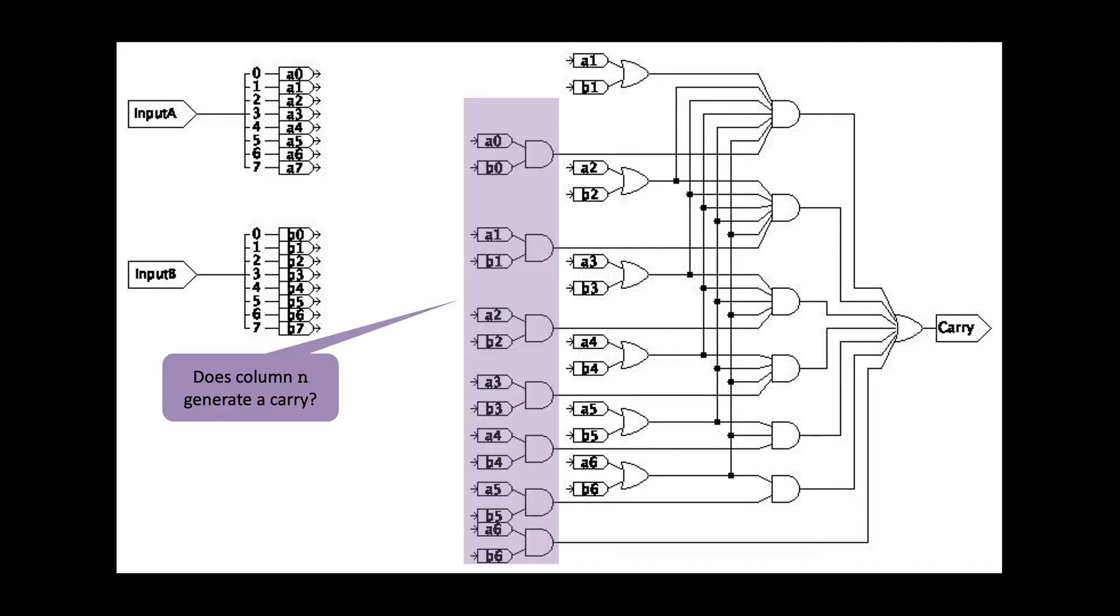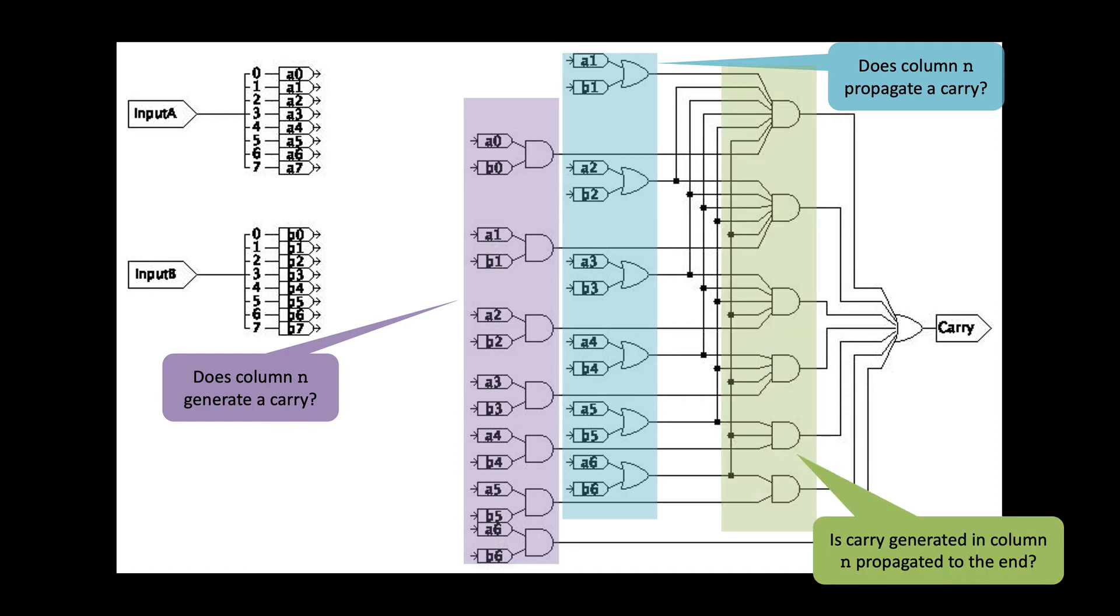So let's go back to the version with the named wires and see how this circuit works. This set of AND gates determines which columns generate a carry. This is just the AND gate for all the GNs. Similarly, this set of OR gates determines which columns propagate carries. These are just the OR gates for all the PNs.